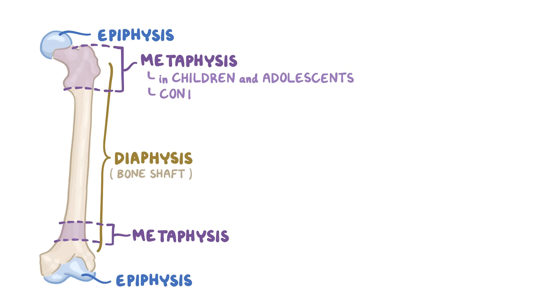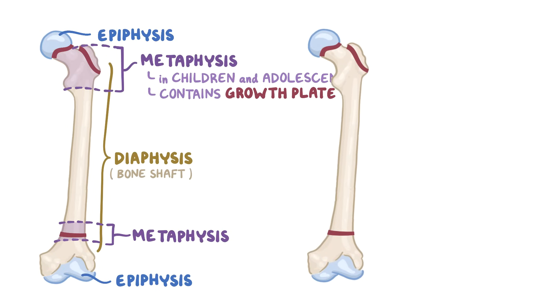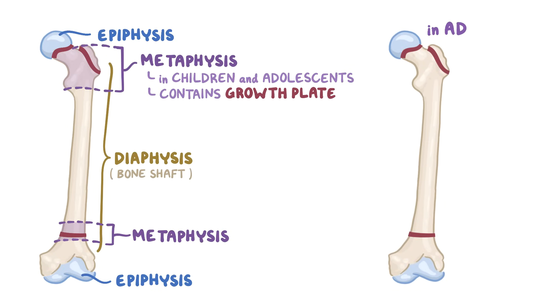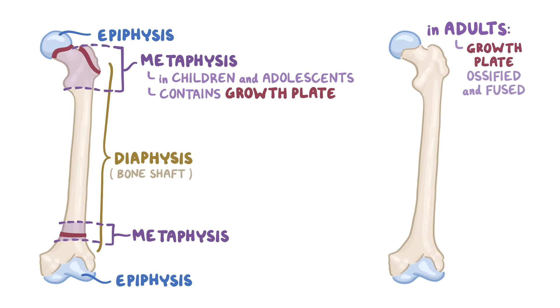The metaphysis contains the growth plate, the part of the bone that grows during childhood. In adults, the growth plate has ossified, fused with the diaphysis and the epiphysis.